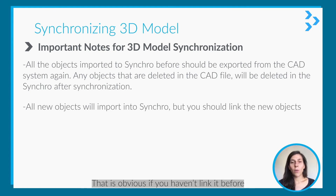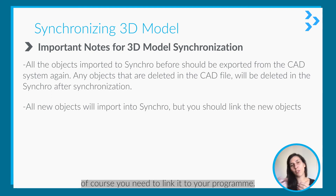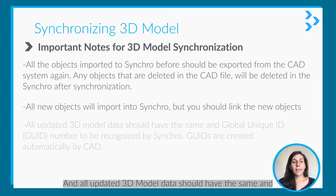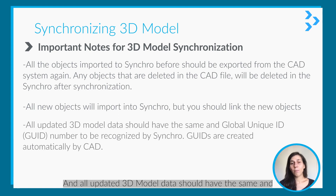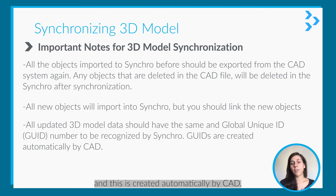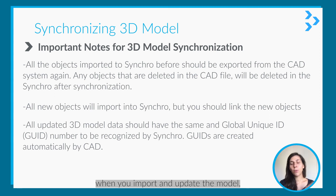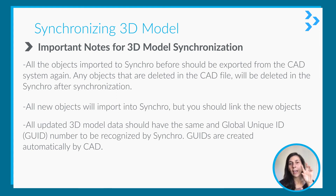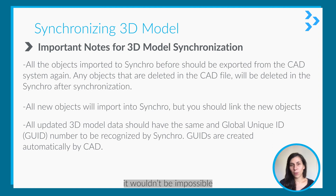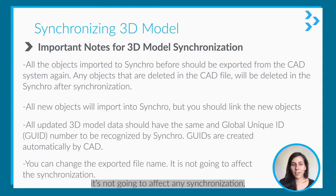If you haven't linked a new object before, and there's a new object in the model, you need to link it to your program. All updated 3D model data should have the same global unique ID number to be recognized by Synchro — this is created automatically by CAT. This is important because when you import an updated model, this is how Synchro knows two objects are the same. If you change the ID, Synchro won't be able to match them. You can change the exported file name without affecting synchronization — the IDs are what matter.